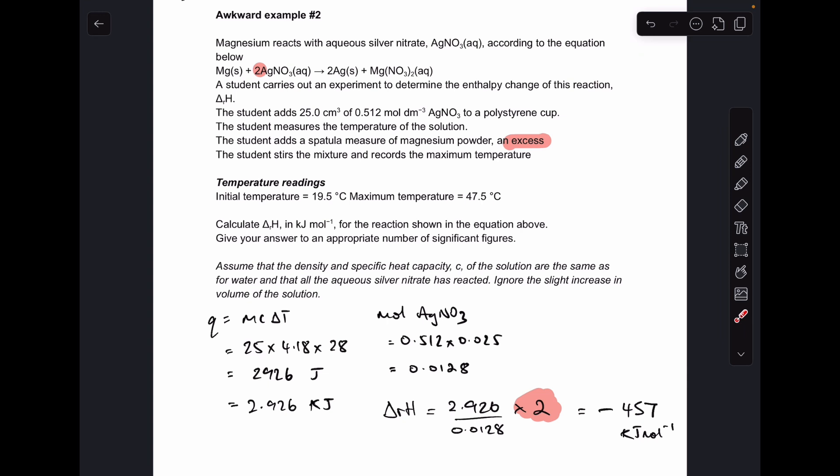So here's the awkward bit here. Now normally to get the enthalpy change for the reaction, we've just gone kilojoules divided by moles. But in this case, you'll notice we've had to double it. And that's because in the balanced equation, we've got 2 in front of the silver nitrate. So if we didn't double, what we're actually finding is the enthalpy change for one mole of silver nitrate. But remember, the enthalpy change for reaction is the enthalpy change for the reaction in terms of the moles involved in the balanced equation. So 2 moles of silver nitrate, so we double it.